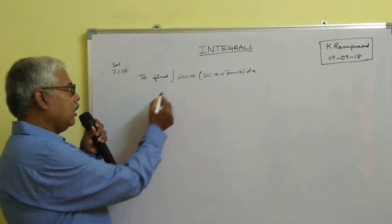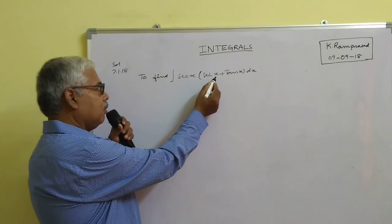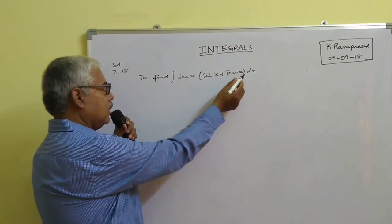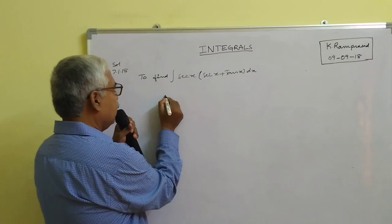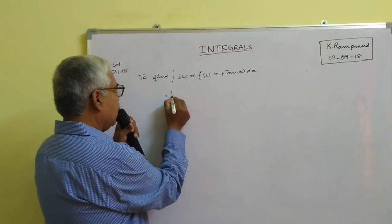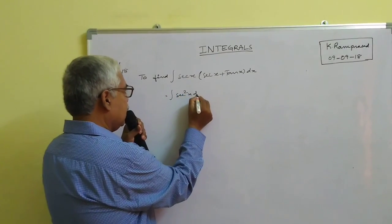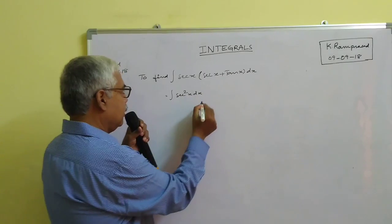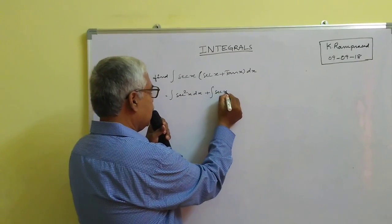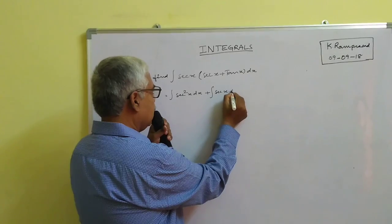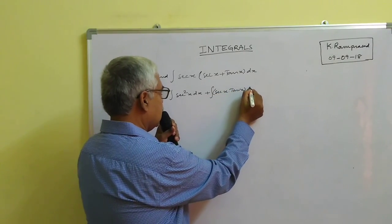We are going to find the integral of secant x into (secant x plus tan x) dx. This can be written as the integral of secant squared x dx, plus the integral of secant x into tan x dx.